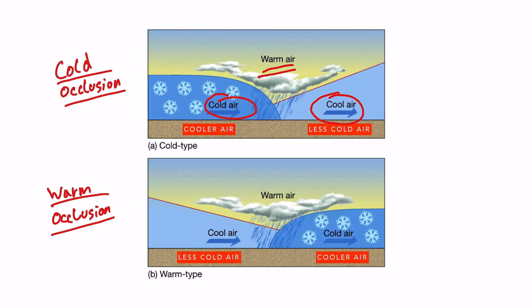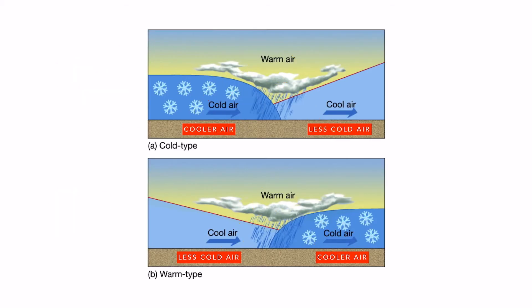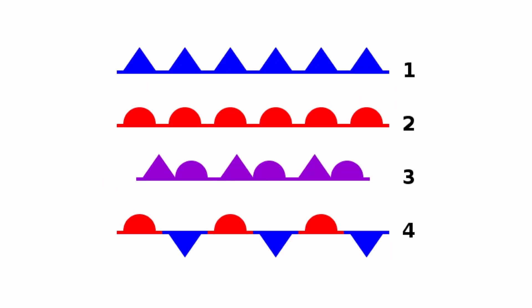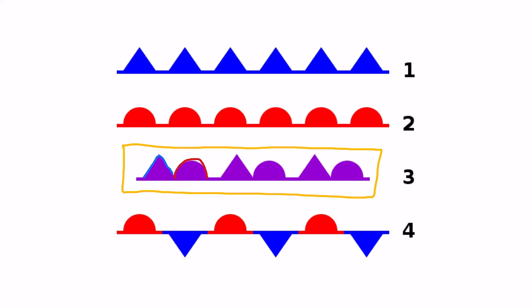In a cold occlusion we have cold air ahead, colder air behind, and warm air pushed up. A warm occlusion is seen when less cold air replaces the colder air that is ahead, and warm air is again pushed up. Warm occlusions are not very common in India. In occluded fronts the weather is quite intense and we observe embedded cumulonimbus clouds — the CB cloud is embedded between the two cold air masses. On a surface pressure chart, an occluded front is indicated with both cold and warm front symbols, because it's a combination of both.